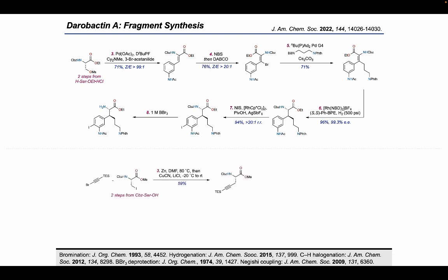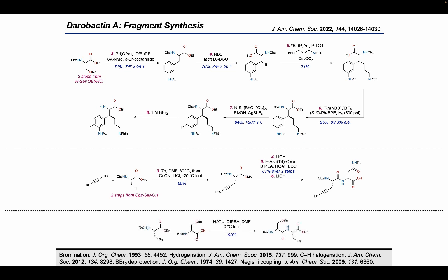The third block could be made through a copper-mediated coupling with the organozinc species derived from iodoserine and a brominated alkyne. Hydrolysis of the ester, peptide coupling with asparagine methyl ester, and a second hydrolysis delivered the third block. The final piece, the protected serine-phenylalanine side chain, could be made through a simple peptide coupling.